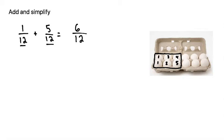Well, let's look at the dozen eggs as a whole. How many out of the dozen eggs do we have? We have 6 out of 12, or we can think of it as half of the package of eggs. So 6 out of 12 could also be represented as 1 out of 2.